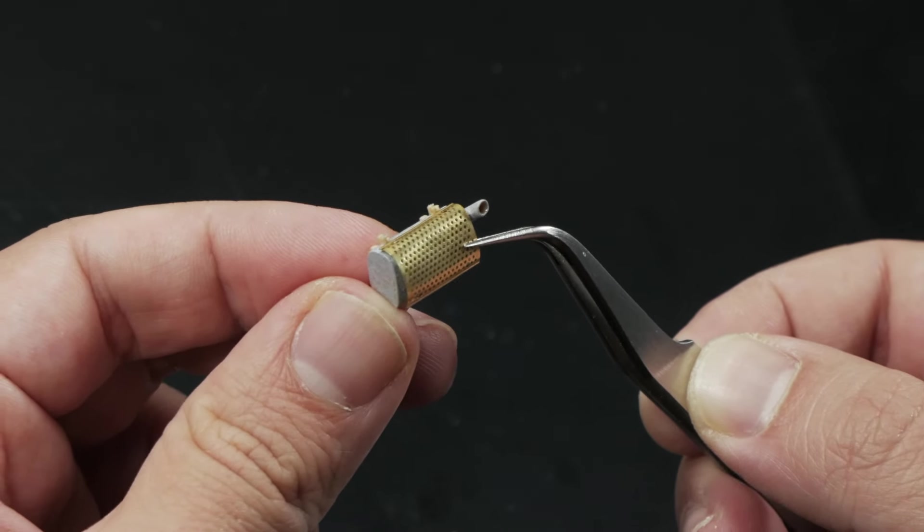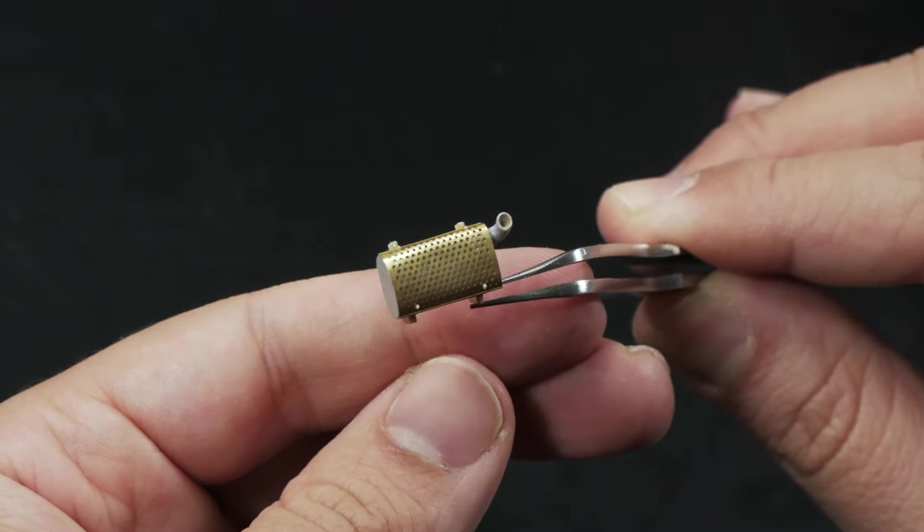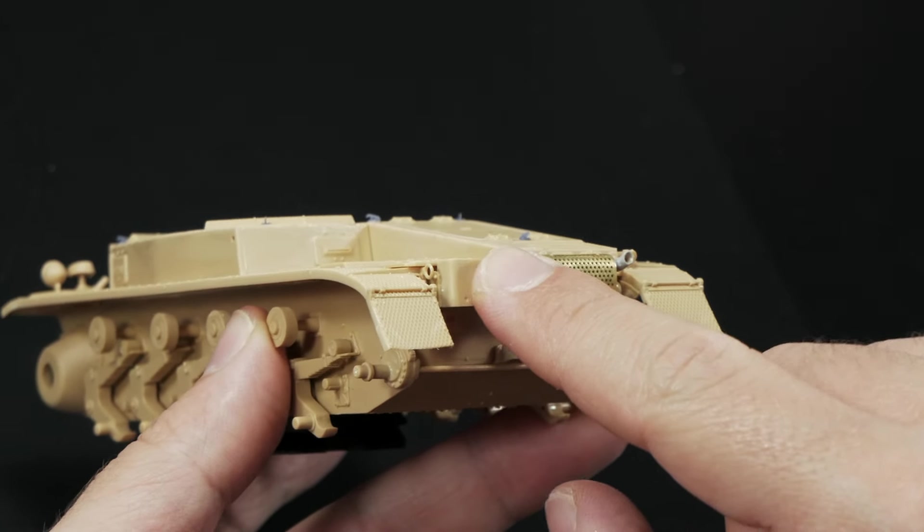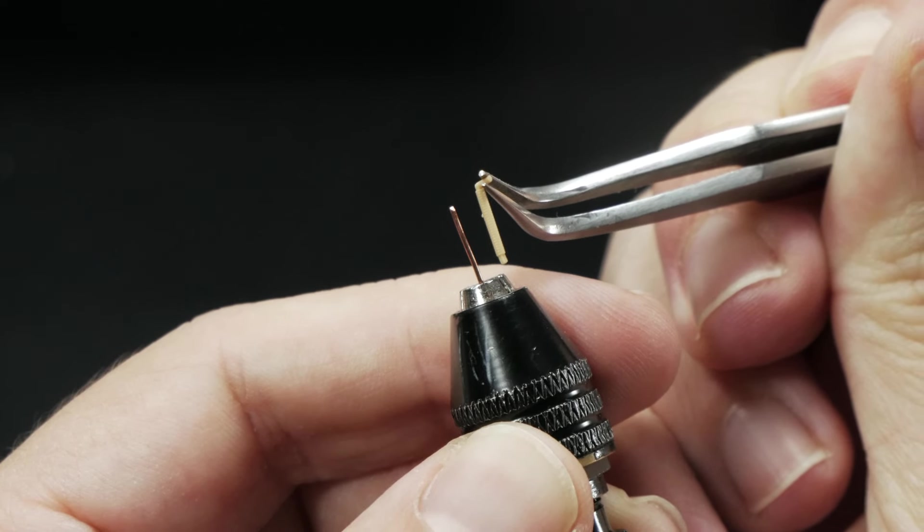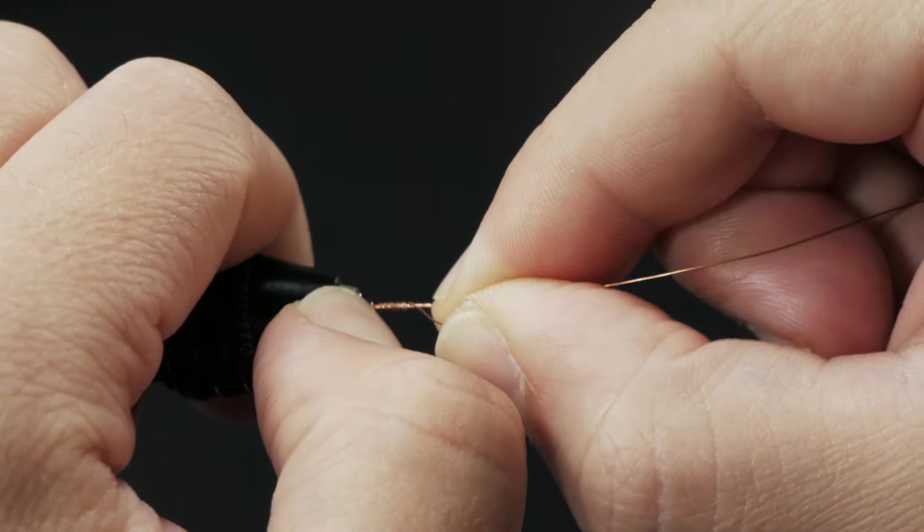As I mentioned, the rear area has interesting features. Both fenders are kept in place thanks to some sturdy metal springs which lock them in position. Have a look how simple they have been represented in this plastic part. So I would have to represent some better ones.